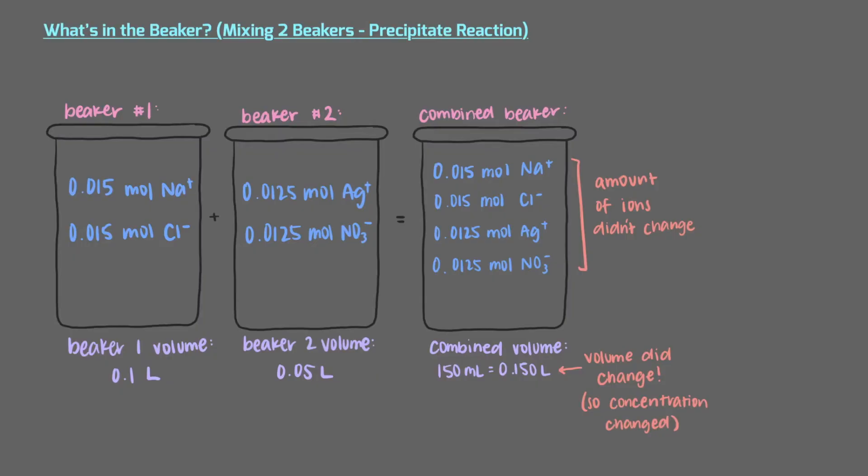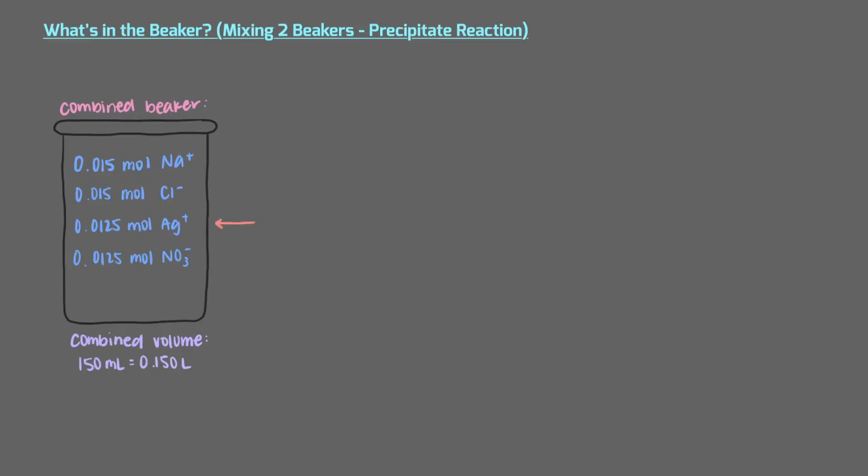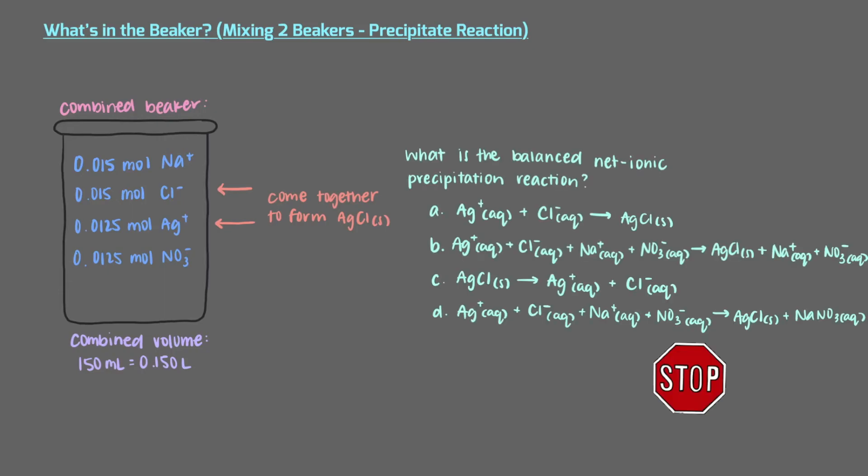Sometimes, like we saw in another video, nothing happens and ions don't come together to form a precipitate when two solutions are mixed together. However, in this new solution, the silver ions and the chloride ions will come together to form a solid precipitate, silver chloride. What is the balanced net ionic precipitation reaction?